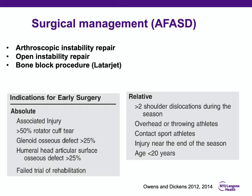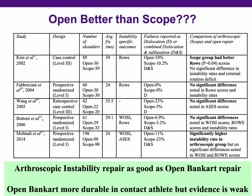Surgical treatment indications include rotator cuff tear, glenoid defect more than 25%, and humeral head lesion more than 25–40%. Relative indications include two dislocations within a season, age under 20 years, and contact or overhead athletes. Arthroscopic instability repair is as good as open Bancart repair based on level one and level three studies, though open Bancart repair may be more durable in contact athletes. The shoulder terrible triad — dislocation with cuff tear and axillary nerve injury or brachial plexopathy — is treated with immediate rotator cuff or greater tuberosity repair while waiting for axillary nerve recovery.